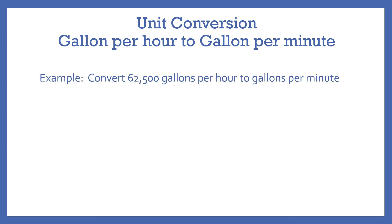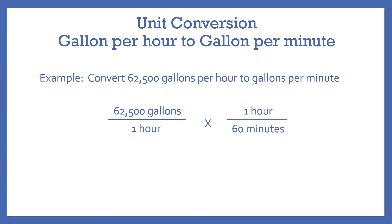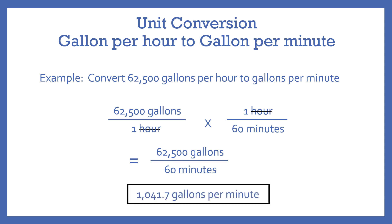Now let's do a quick conversion using a value that you may realistically see. As an example, let's say you need to convert 62,500 gallons per hour into gallons per minute. You take the 62,500 gallons per hour and multiply it by one hour per 60 minutes. You then divide 62,500 by 60, and the resulting value is 1,041.7 gallons per minute.